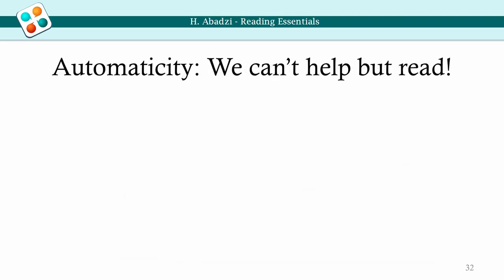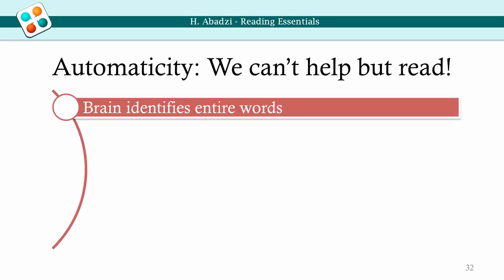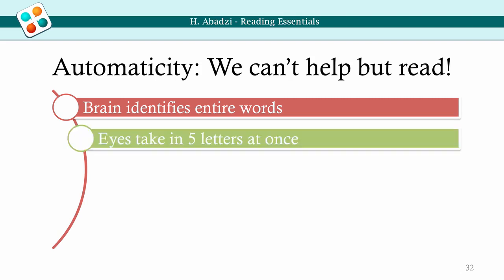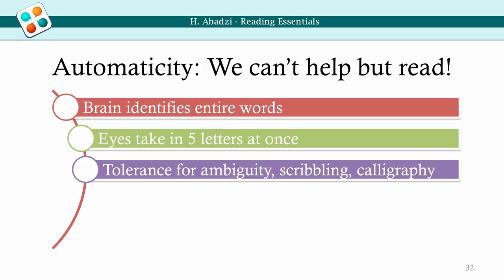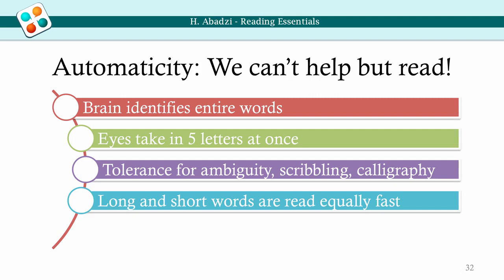When we obtain automaticity, we can't help but read, just as we can't help but recognize known faces. The brain identifies entire words, but individual letters are still visible. Our visual system processes four to five letters at once, as if they were people's facial features. We require tolerance for ambiguity — scribbling, calligraphy — just as we can distinguish our friends when they grow a beard or are seen in profile. These qualities are required for effortless processing of long texts. Then we focus on the message rather than the print.